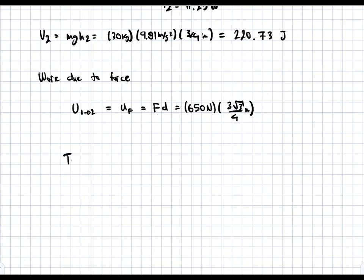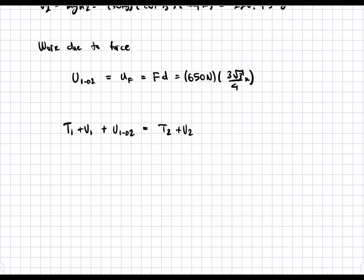So we have state 1. So T1 plus V1, plus the work to go from 1 to 2, is going to be equal to T2 plus V2. And this work, we're adding it on this side because it's work we're adding to the system to get to state 2. And since this is positive, we're adding work on this side. So watch for the sign convention. And we can plug everything in. So we get 0 plus 110.4 joules plus 650 newtons times 3 root 3 over 4 meters is equal to 11.25 omega squared plus 220.7 joules.